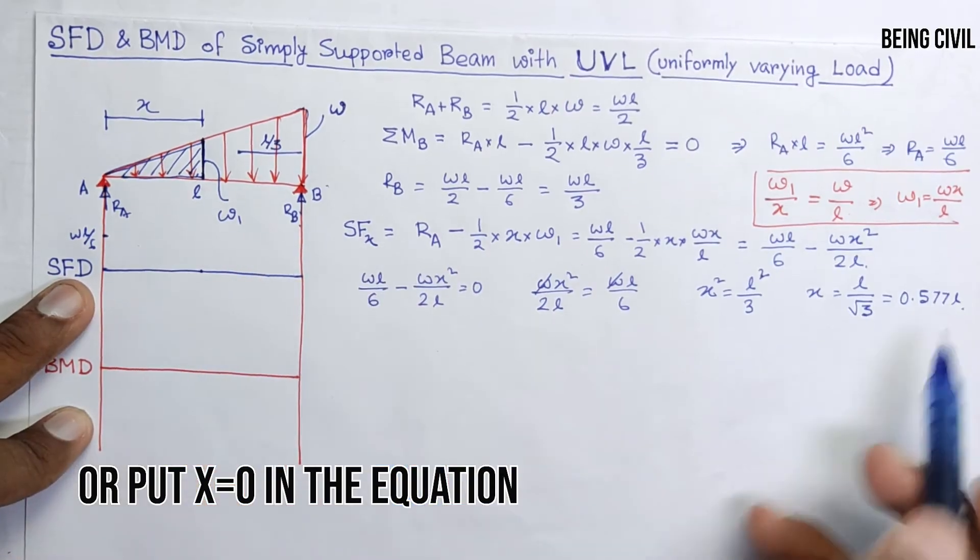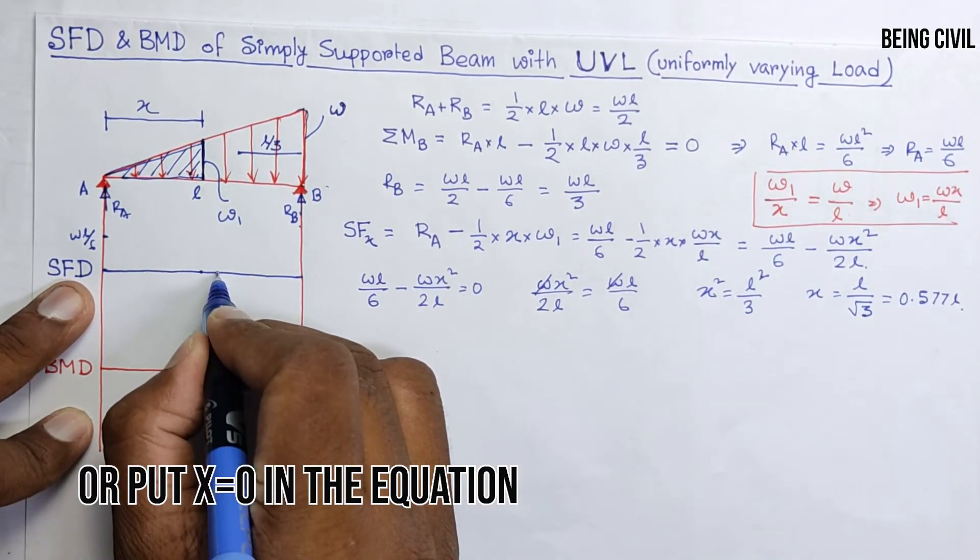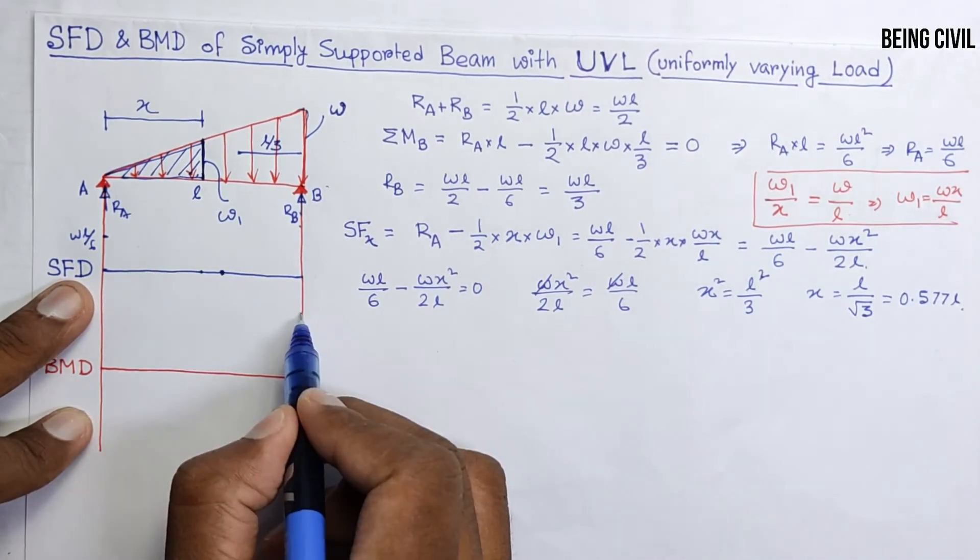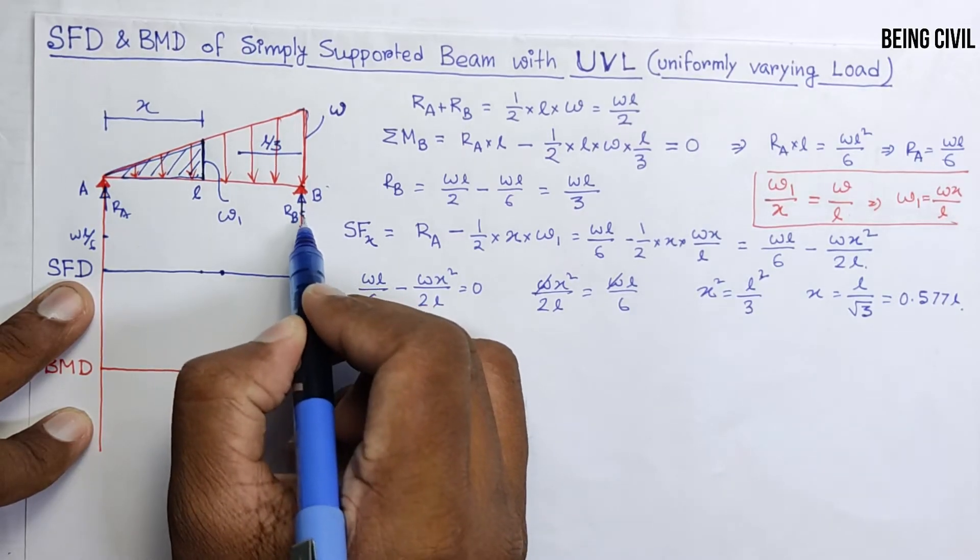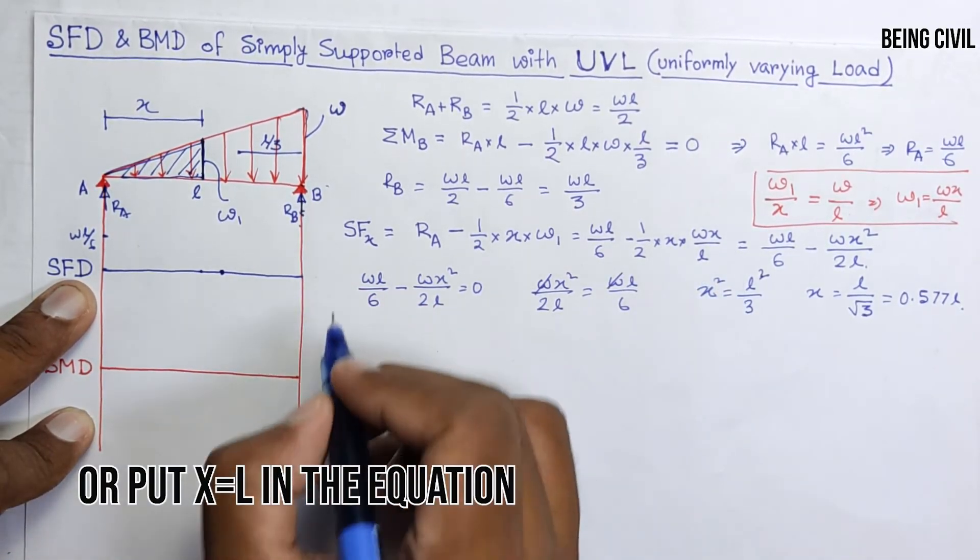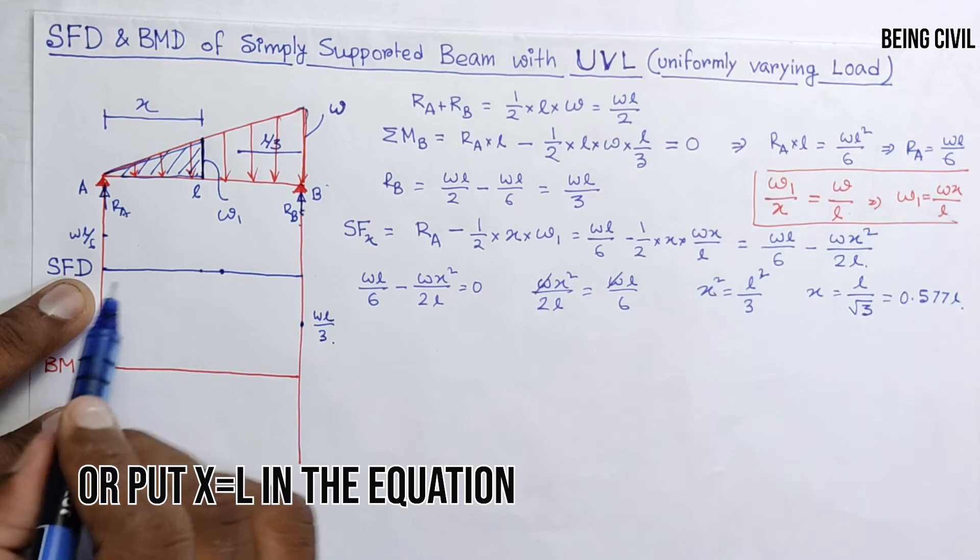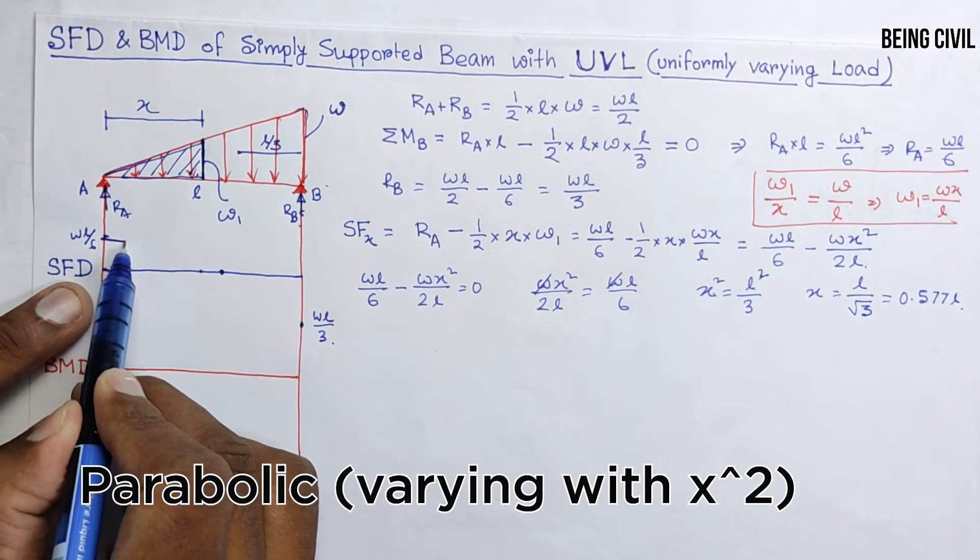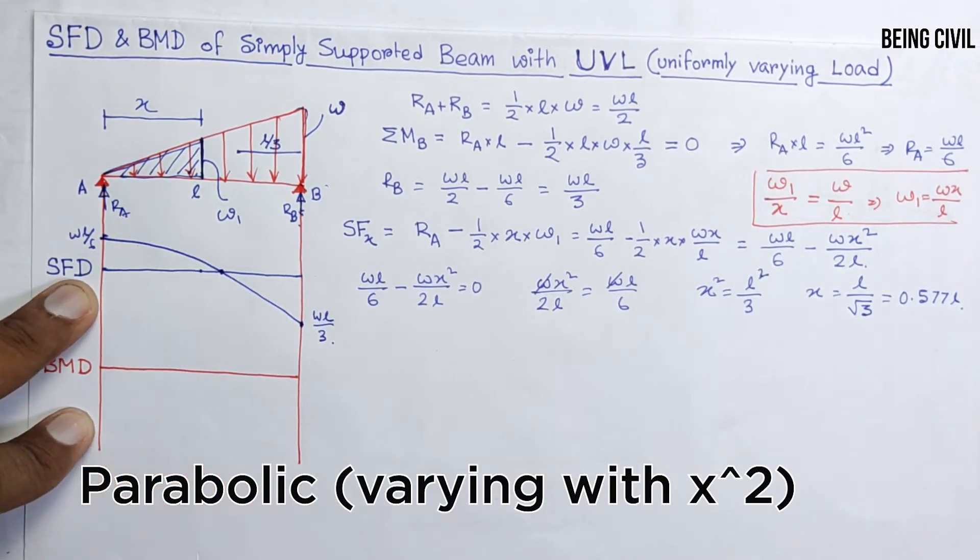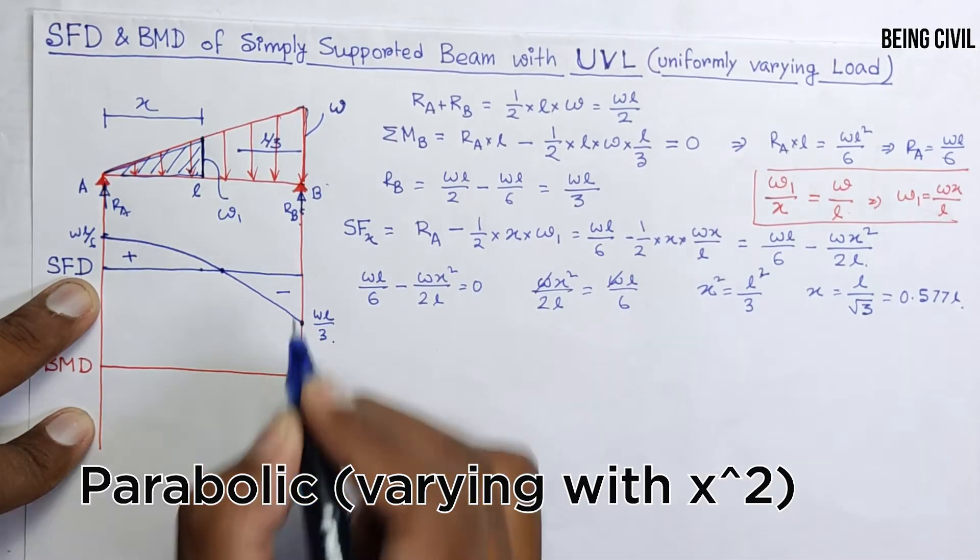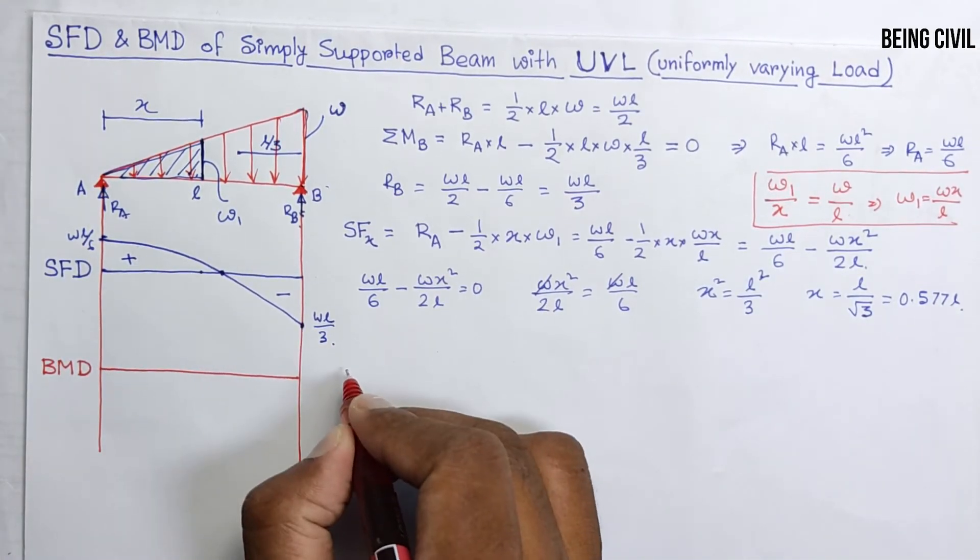At this point it will be equal to RB but in negative sign, so WL by 3 here. So the shear force diagram will be like this: it is positive, it is negative. Now coming to the bending moment equation.